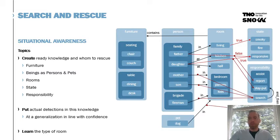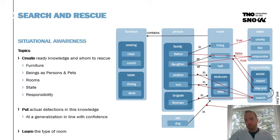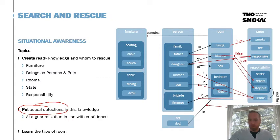Spot also has particular responsibilities: he should search for people, and once found and localized, he should either stay put or report their whereabouts to the commander. An important aspect is to put actual detections into the knowledge at the level at which you are confident. If you've located a person, you say you've located a person. But if you know more specifically it's the father, you say you've located the father — putting information at the right level of generalization.